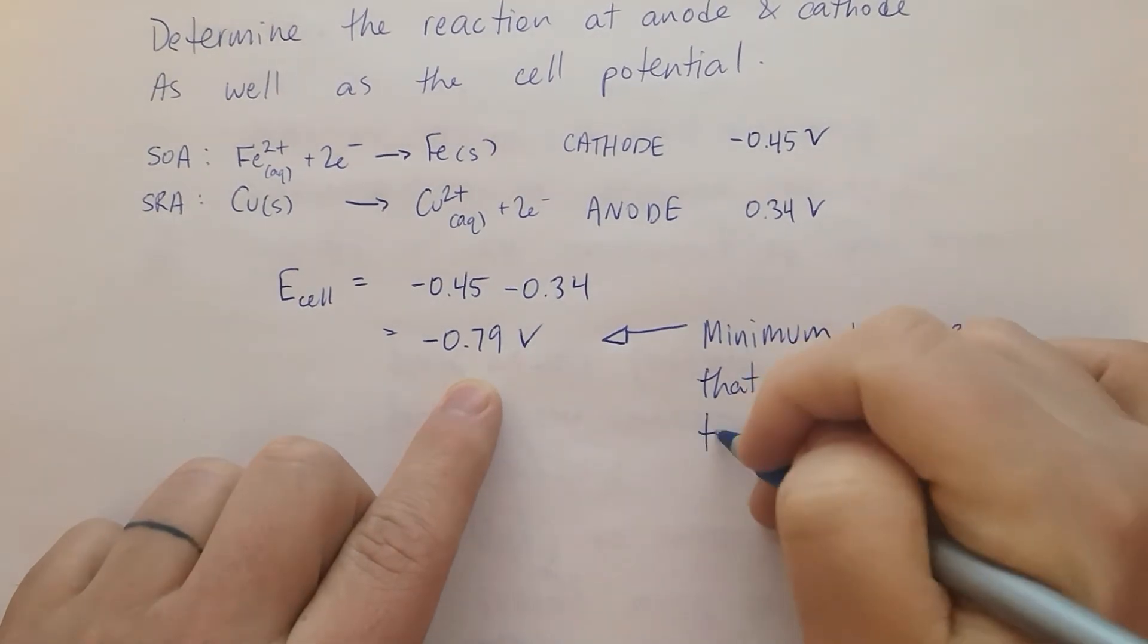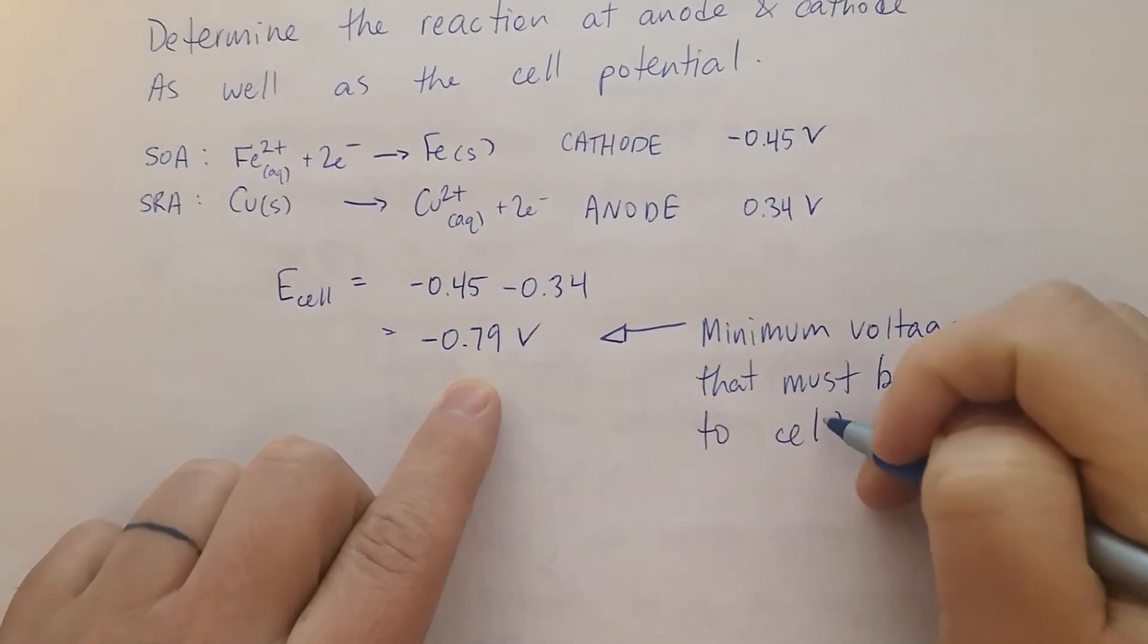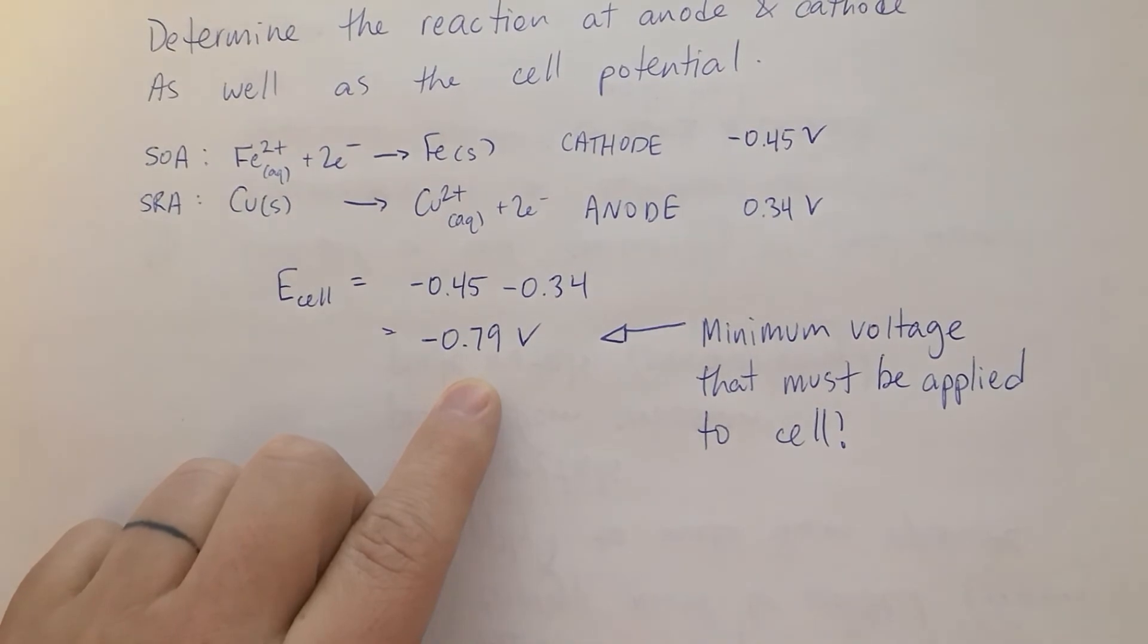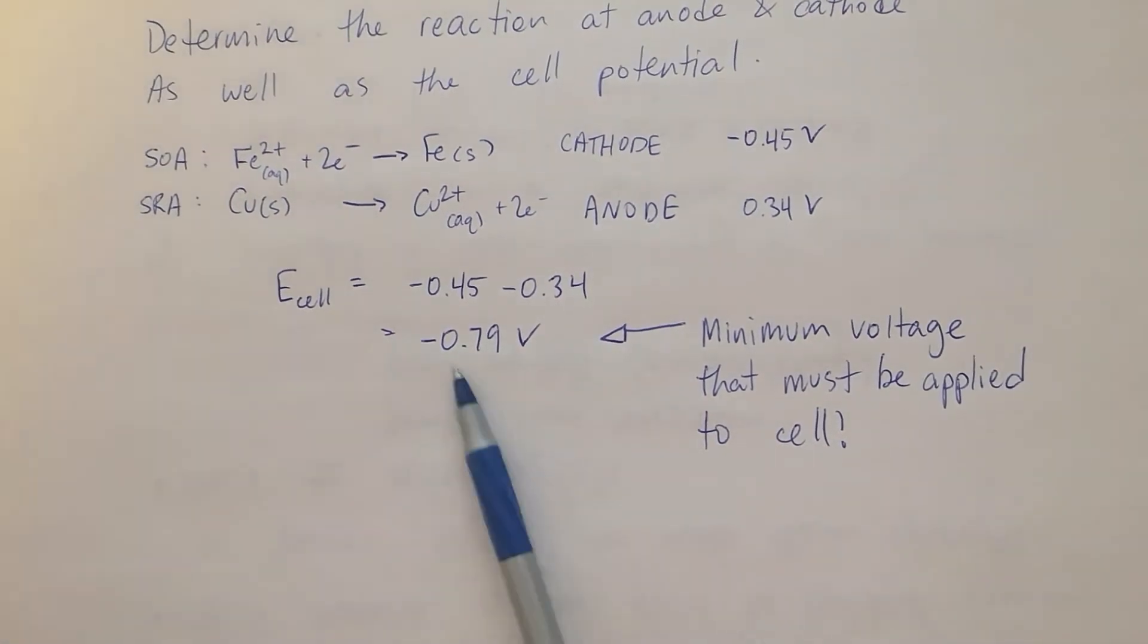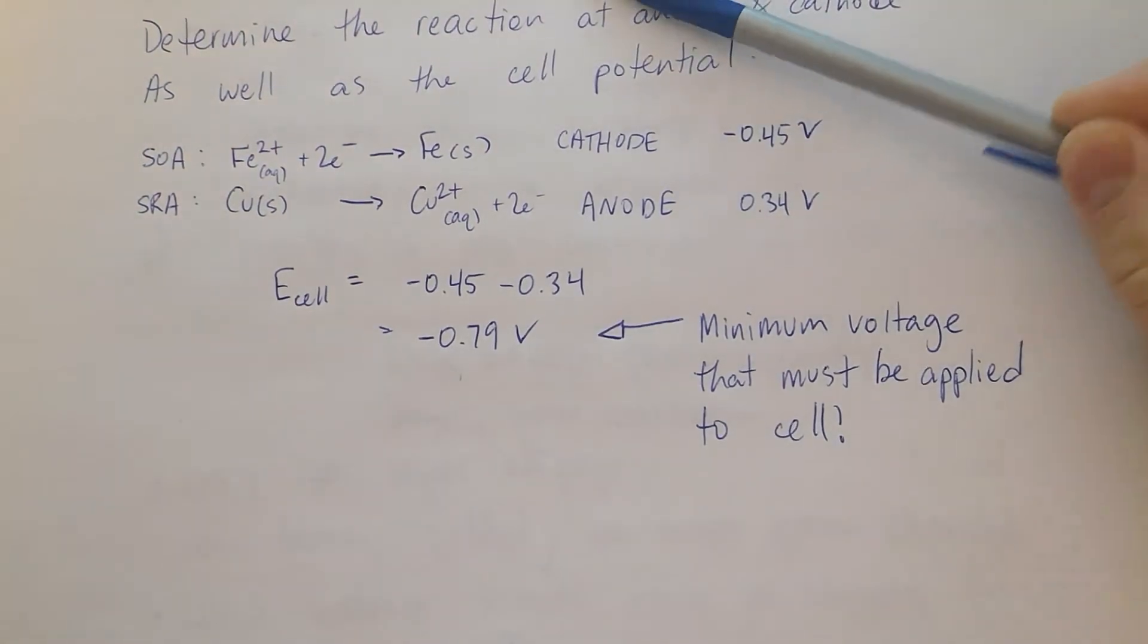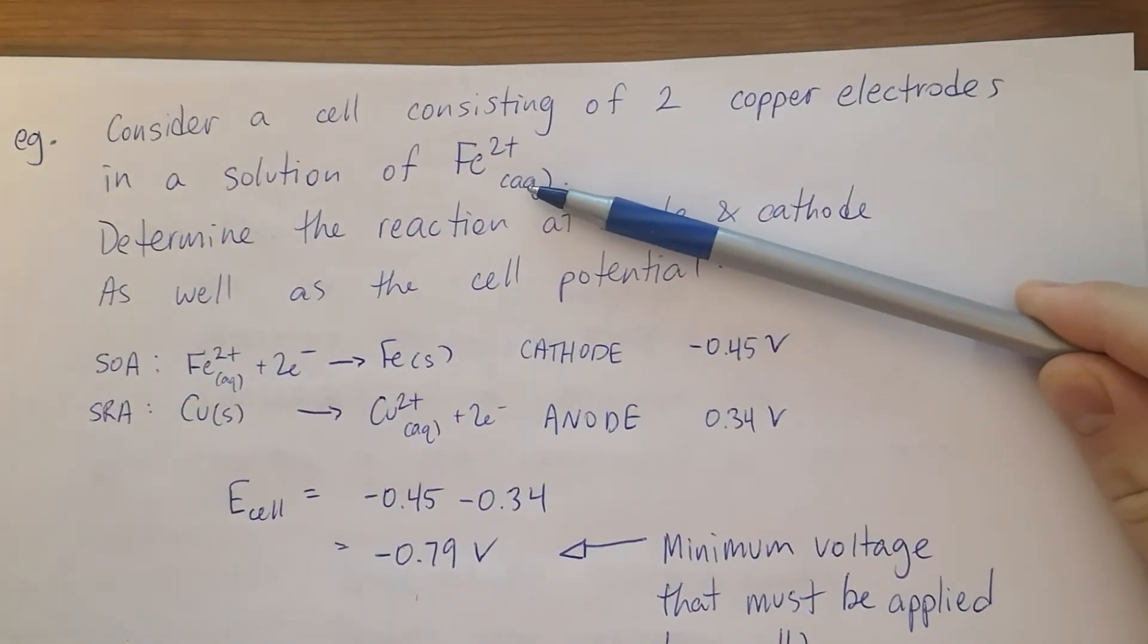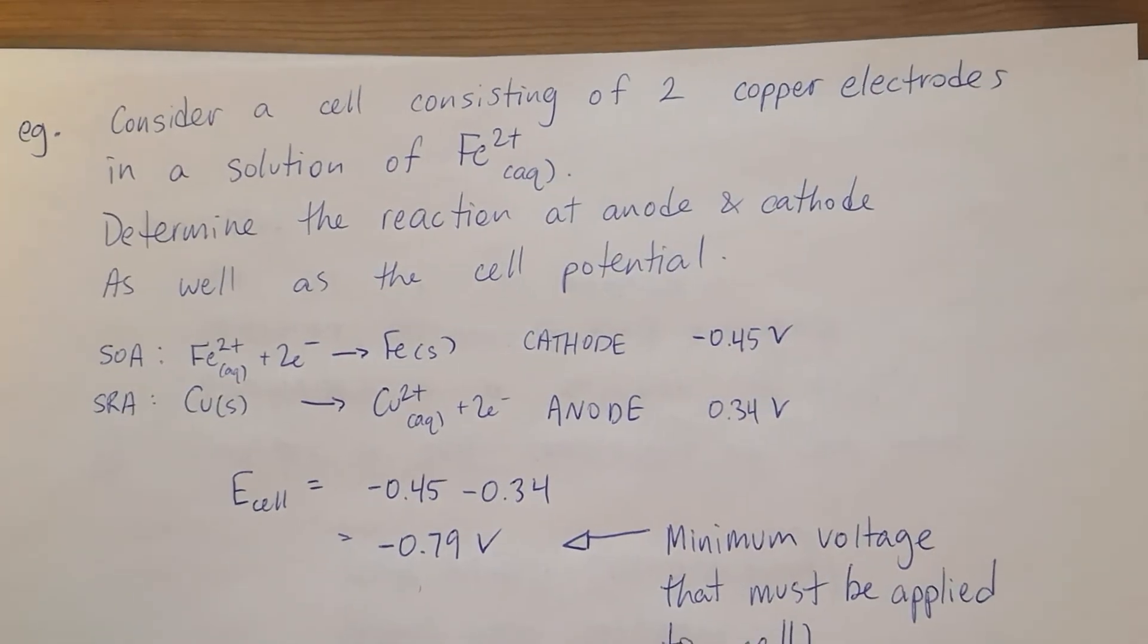I'll make that exciting. So if we add 0.79 volts to two pieces of copper in an iron 2 solution, we'll get electrons moving from one copper electrode to the other. One of them is the anode, one of them is the cathode.